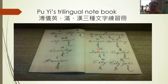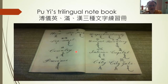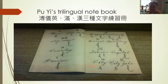Why? Because we have a very interesting little notebook — Puyi's trilingual notebook. It's in English because he was learning English with Reginald Johnston, a very important person when it comes to East-Western contacts, and it also contains Chinese and Manchu. And his Manchu is not bad. This shows that he had practice.